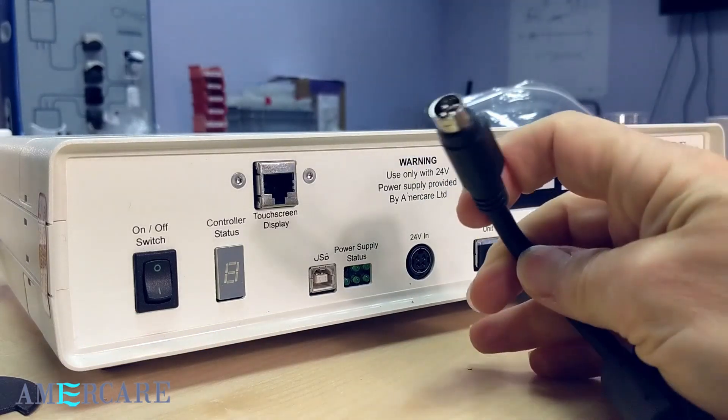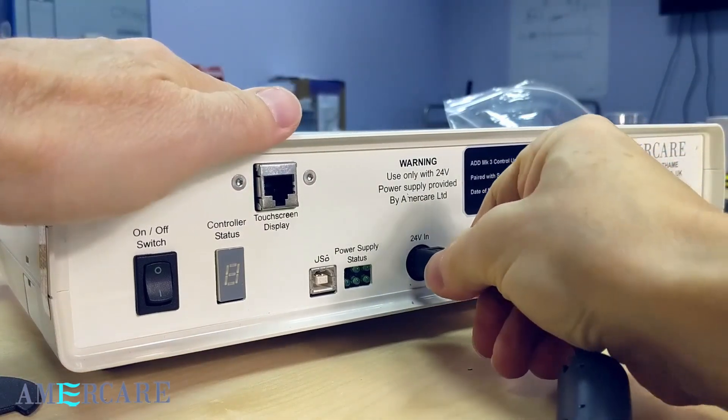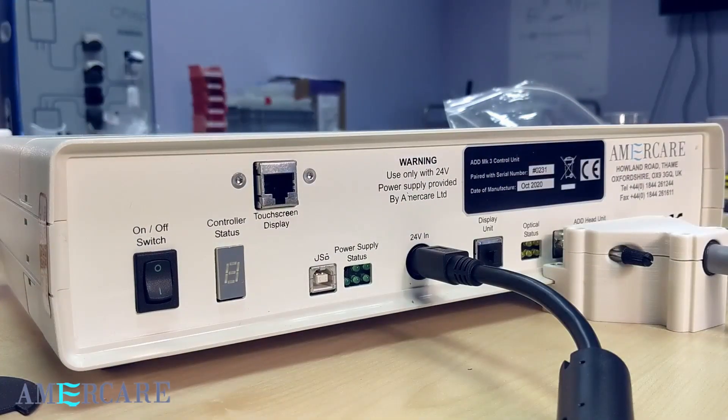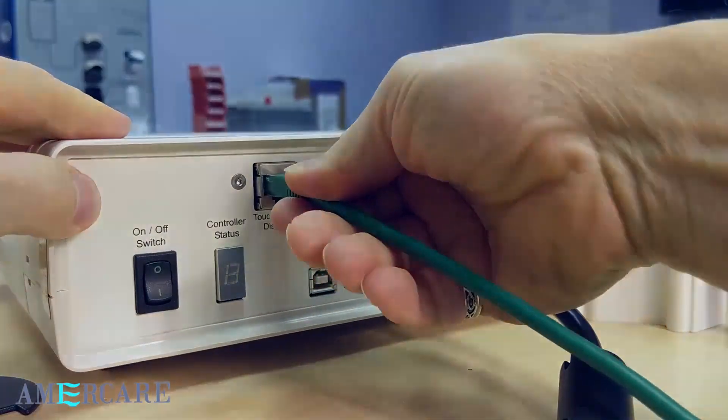The unit is powered using the supplied 24 volt power brick. The plug end simply plugs into the socket on the control unit labeled 24 volts in. The display's CAT5 cable plugs into the socket labeled touch screen display.